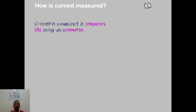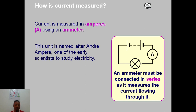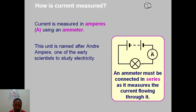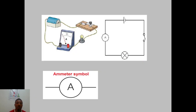How is current measured? We use an instrument called an ammeter. To measure current flow in a circuit, we connect the ammeter in series — that is an end-to-end connection. The positive terminal of the battery must be connected to the positive side of the ammeter, and the negative terminal to the negative side, and that way current will flow through it.